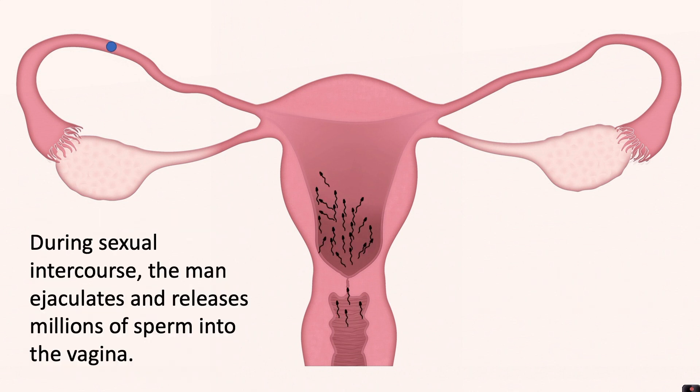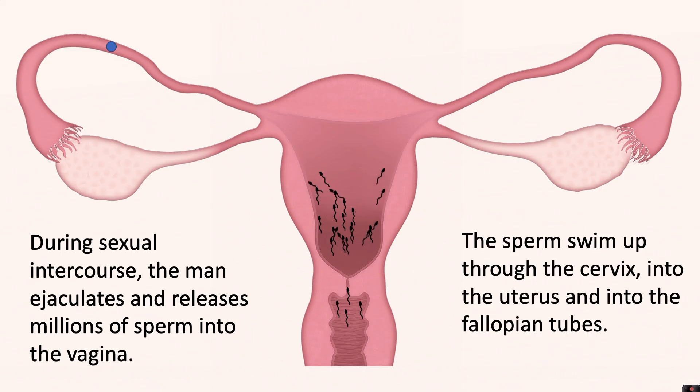During sexual intercourse the man ejaculates and releases millions of sperm into the vagina. The sperm swim up through the cervix into the uterus and into the fallopian tubes.